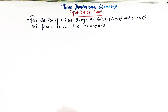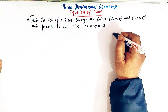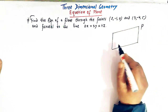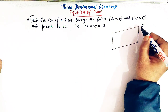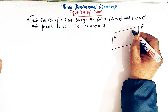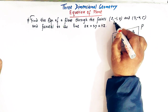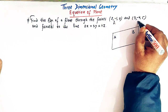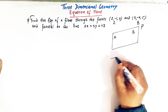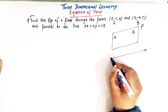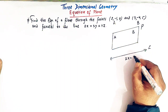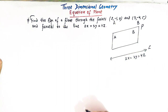So here we have to find the equation of a plane. Let us draw a rough diagram. Suppose this is a plane P whose equation is to be determined. This plane P passes through two points, say A and B, and this plane is parallel to some given line whose equation is 2x = 3y = 4z.